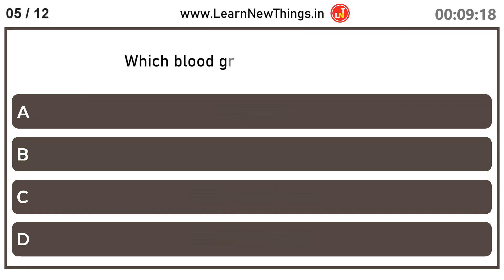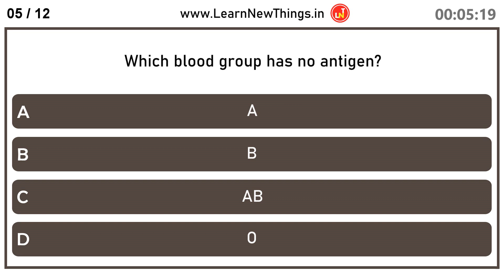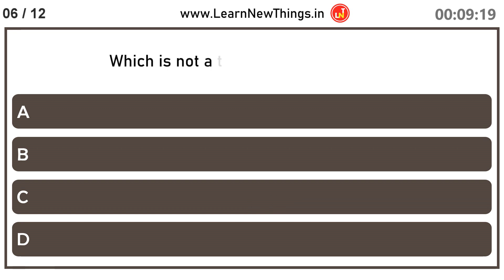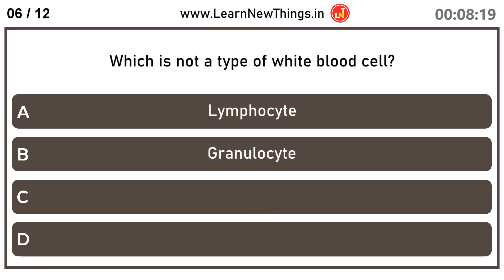Which blood group has no antigen? O. Which is not a type of white blood cell? Erythrocyte.